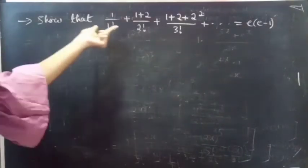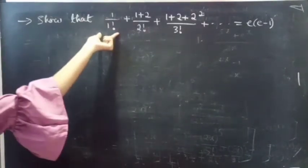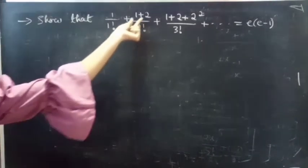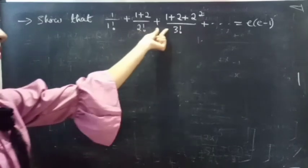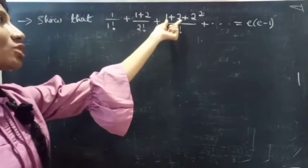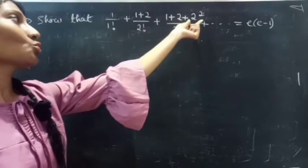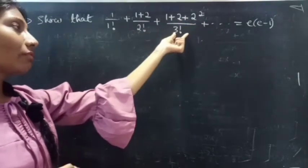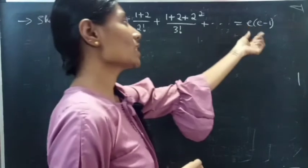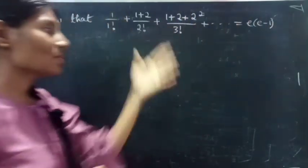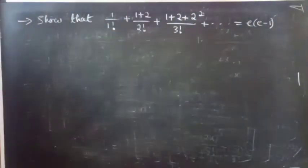Problem: Show that 1 by 1 factorial plus 1 plus 2 by 2 factorial plus 1 plus 2 plus 2 squared by 3 factorial plus 1 equals to e into e minus 1.